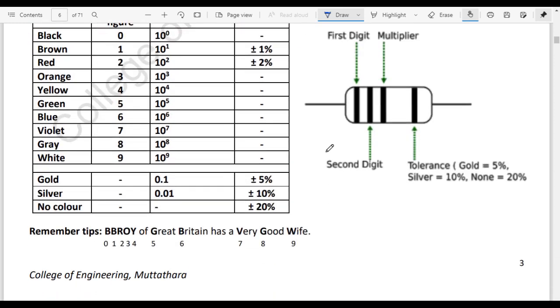BB Roy of Great Britain has a very good wife. First band code is black followed by brown, red, orange, yellow, green, blue, violet, grey, white.